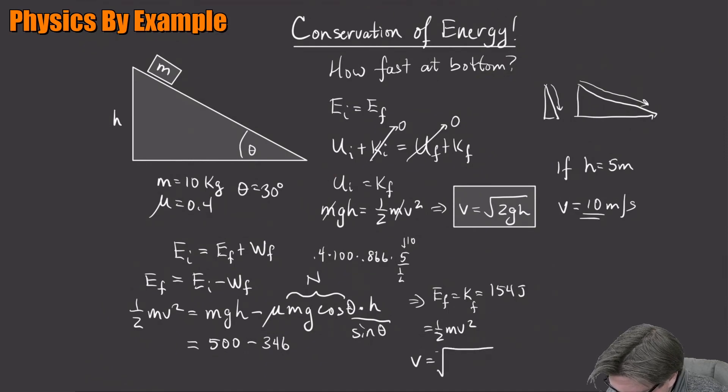Okay, so that must be one half mv final squared. So v at the bottom is square root of - what would that be - 2 times 154 over 10... square root of 30 something is five and a half. So that'll be our final number. Our speed at the bottom when there's friction is going to be 5.5 meters per second. And then you look, does that make any kind of sense? Yeah, if there was no friction we already figured out up here that it was going to be 10, so with friction it kind of makes sense that we're going to be going slower than that.